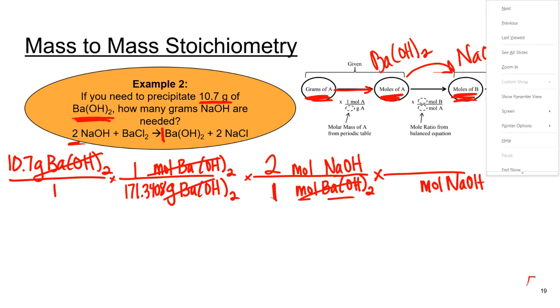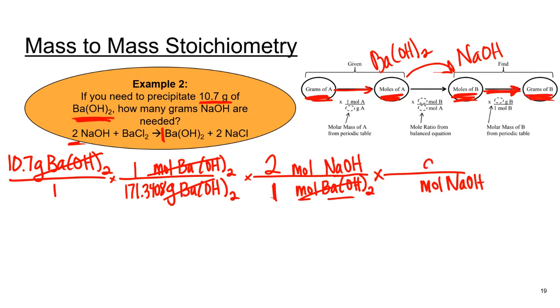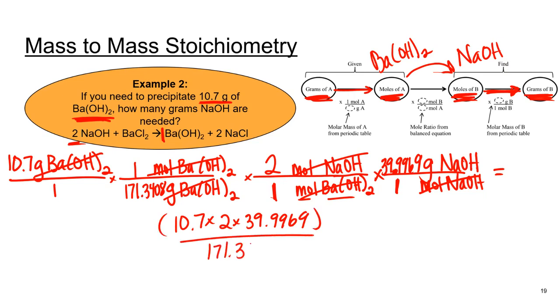We have one last step here to get to grams of sodium hydroxide. We need the molar mass of sodium hydroxide, but we found that in the last problem, 39.9969 in every one mole. Then we just need to multiply everything in the numerator, which is multiplying fractions here, divide by 171, that molar mass of barium hydroxide. And we should get a final answer of 5 grams of sodium hydroxide.